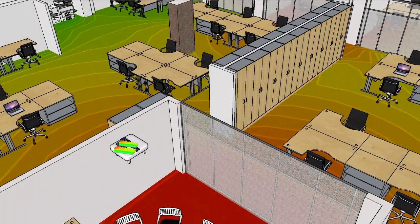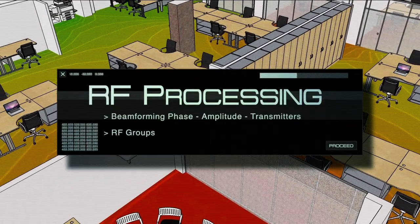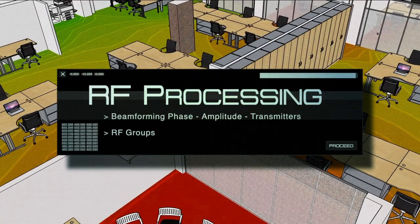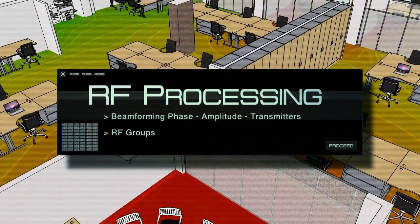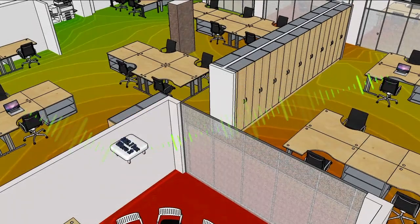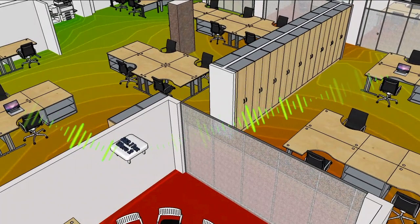Now that the access point has all the information, the central processor computes the necessary phase and amplitude offsets for each data stream for each client in the group. The RF signature will be leveraged to determine the number of transmitters and spatial streams that should be used between the number of clients within the RF group.